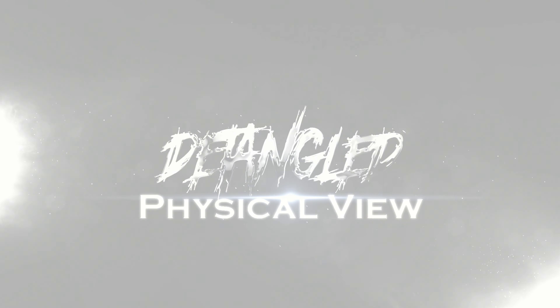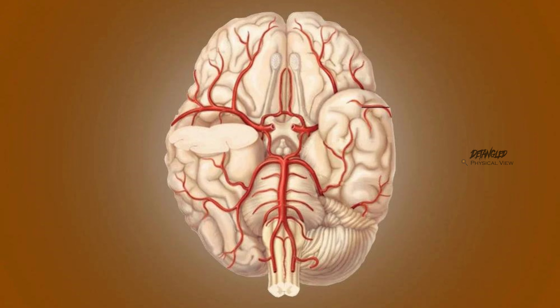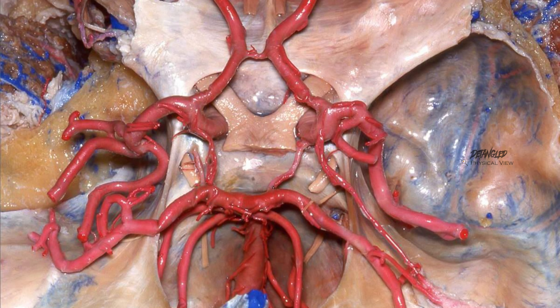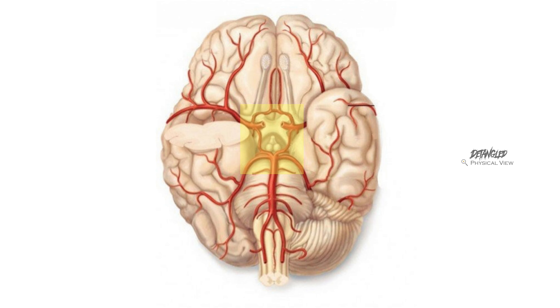Welcome to Detangled. The Circle of Willis, also known as Circulus Arteriosus, the loop of Willis, the cerebral arterial circle, and Willis's polygon, is present below the cerebrum and cerebellum at the base of the brain. In the 17th century, it was named after Thomas Willis, who described it for the first time. It is a circular arrangement of arteries.